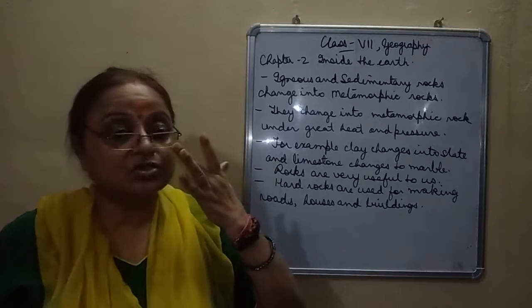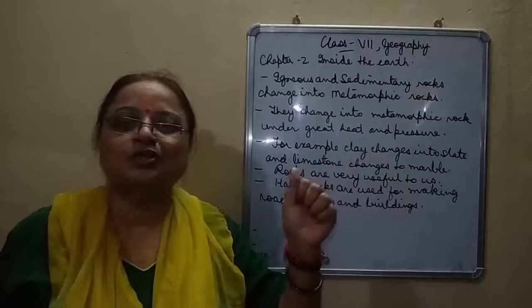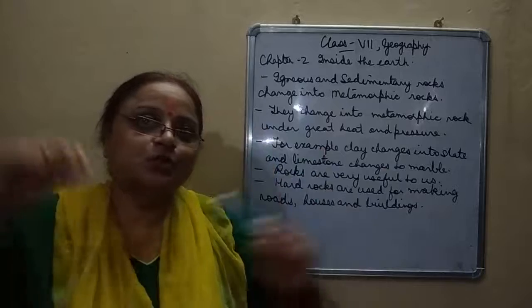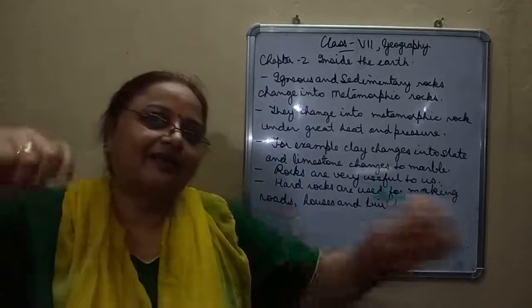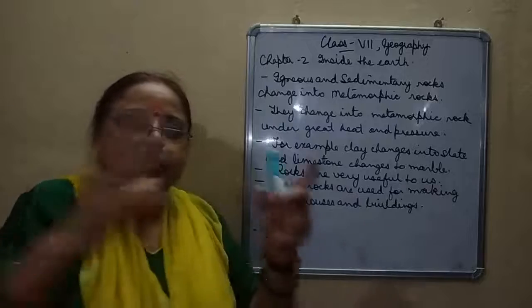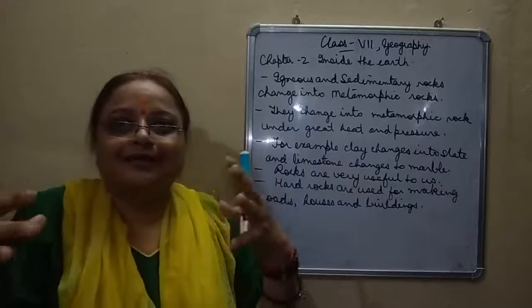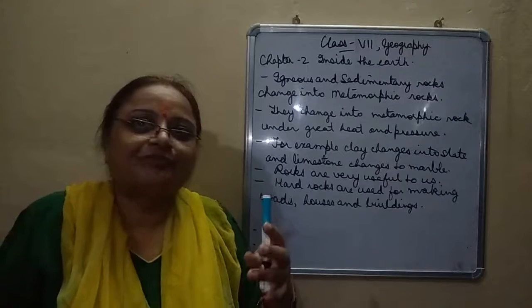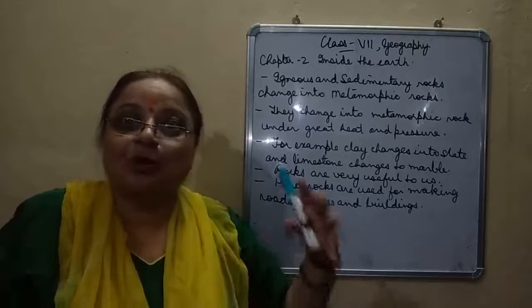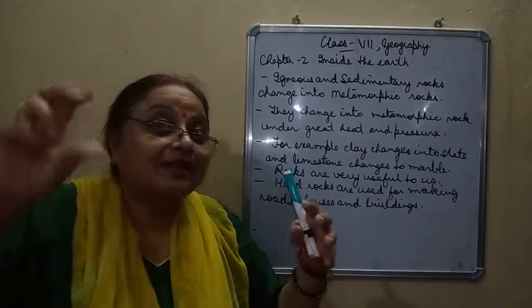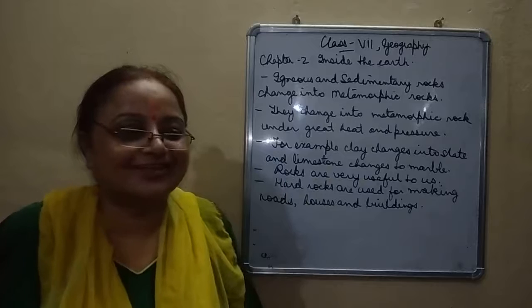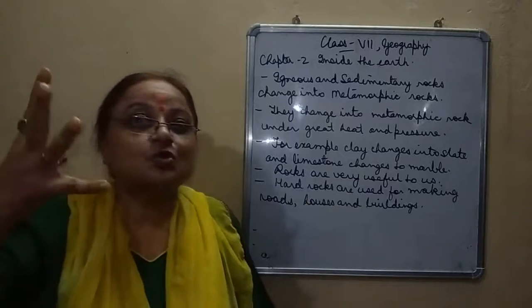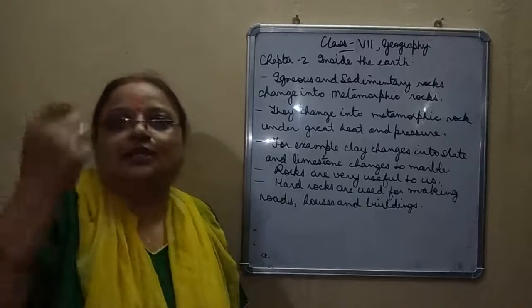Stones are also used in many games. There is pithu, where seven stones are stacked one on top of the other and then hit. There is hop scotch — kit kit — also called tapu. And with five stones we play gitti. All these games use small rock pieces.